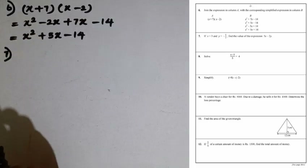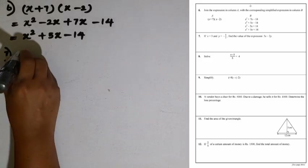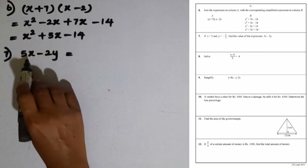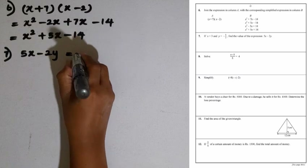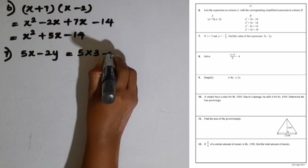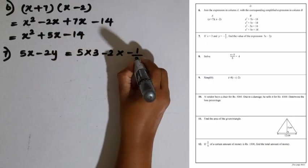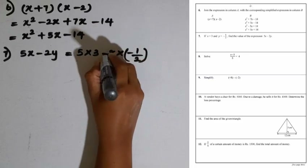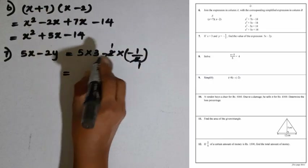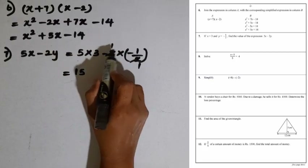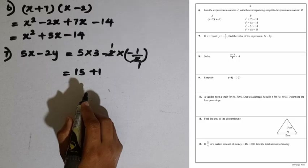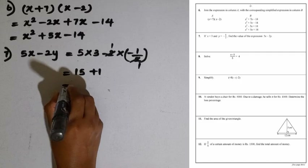Question number 7: if x equals 3 and y equals minus half, find the value of 5x minus 2y. We substitute the given values: 5 multiplied by 3, minus 2 multiplied by minus half. Using a bracket, the 2s cancel, giving 5 times 3 is 15, then minus 2 times minus half gives plus 1. The final answer is 15 plus 1, which is 16.